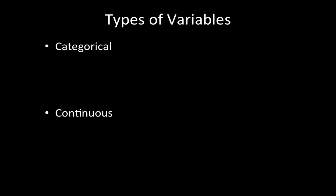Hey guys, this is Mikayla and now I will be explaining the two types of variables that describe data that is collected. The two types of variables are categorical and continuous. Categorical variables, also known as qualitative variables, are variables that take on a fixed number of values.